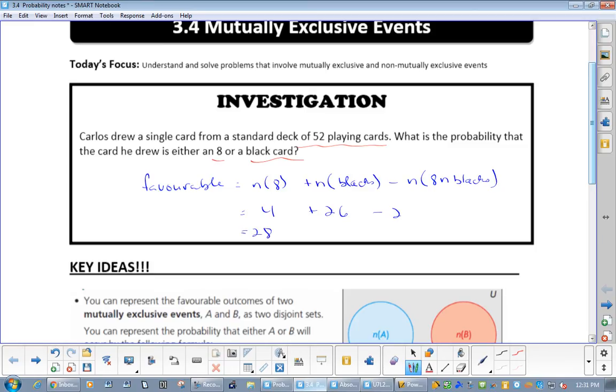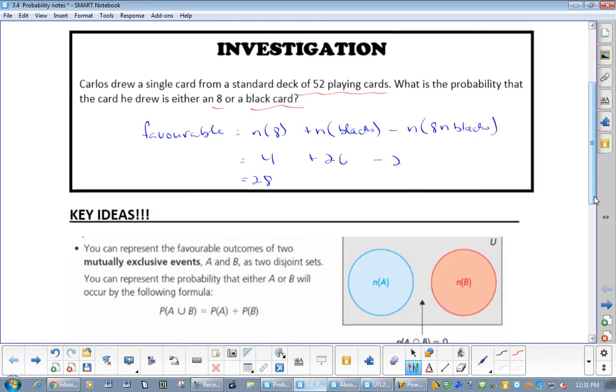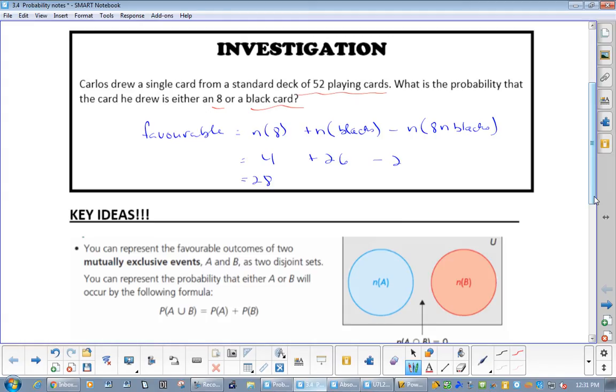So 4 plus 26 is 30, minus 2 is 28. Now, this is the new step, this is gonna rock your world. The probability of an 8 or black is 28 out of 52 equals 7 out of 13. So that's the only thing I'm teaching you new today, is how to put it over the total.